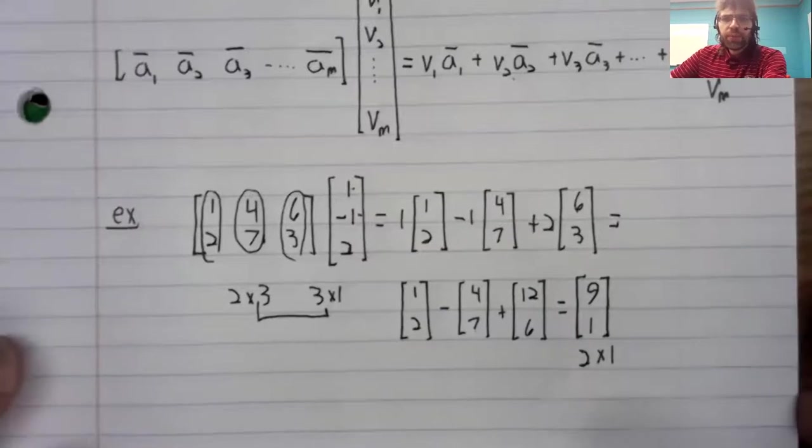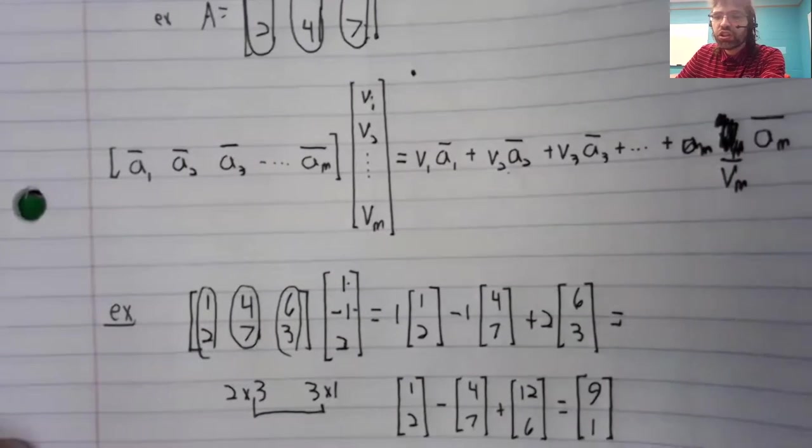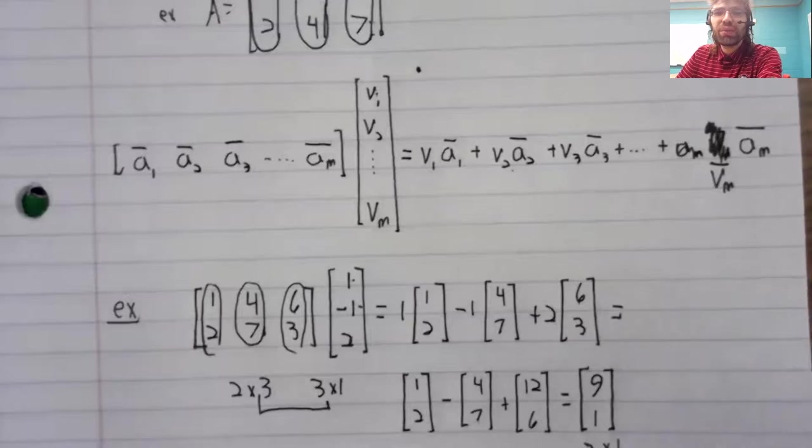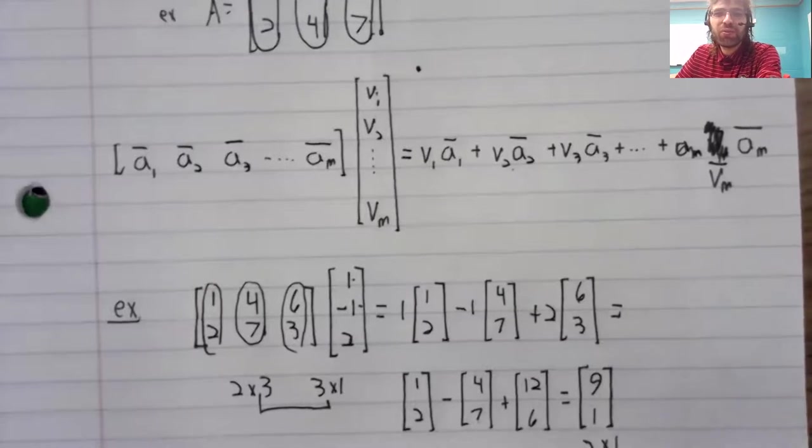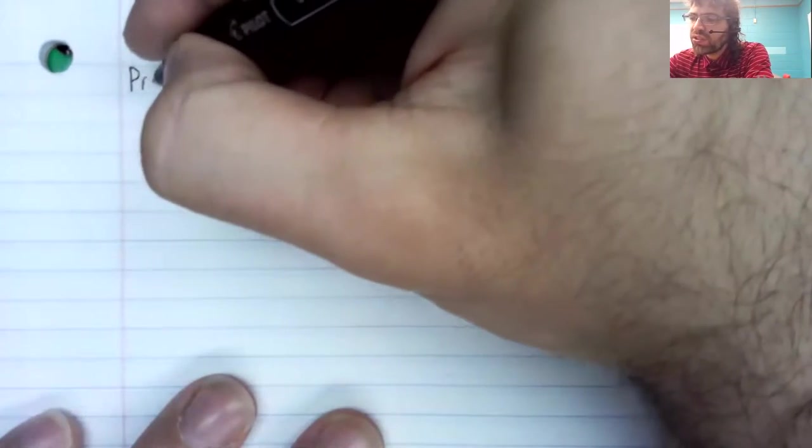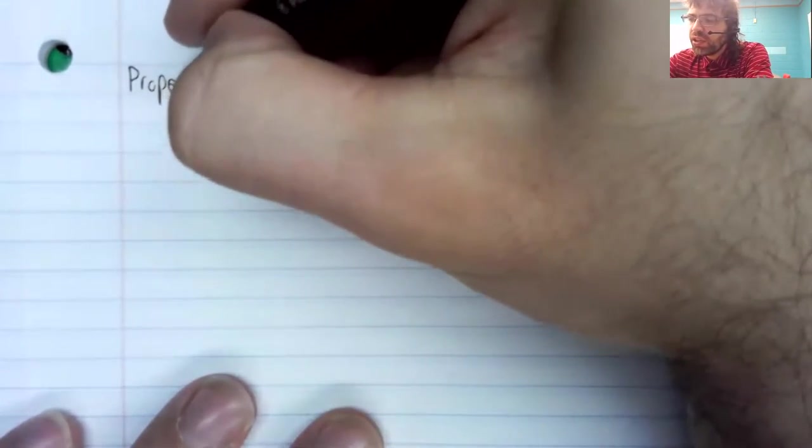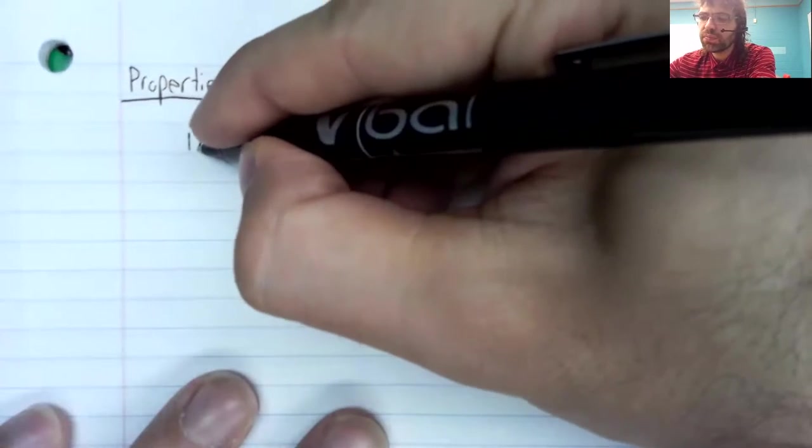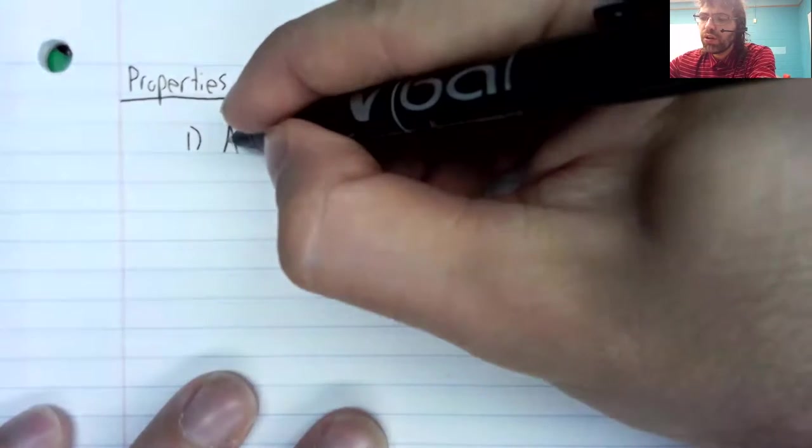Now, as I say, when you see this definition, it doesn't really scream out to you as being obvious, or at least it certainly doesn't to me. But let's end this video by saying that this definition of matrix vector multiplication has some nice properties.